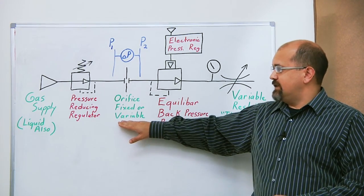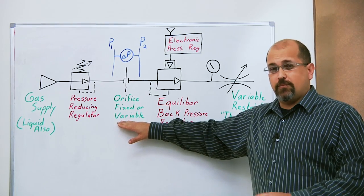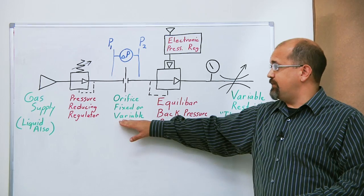The next item is an orifice. The orifice could be a fixed orifice, or in applications where you need more variability in flow rate, this could be a variable orifice.